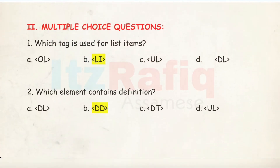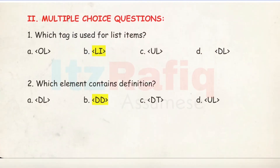Now we will come to MCQ — multiple choice questions. Number 1: Which tag is used for list items? It is 'li'. li stands for list item. Number 2: Which element contains a definition? It is 'dd'. dd means definition description.